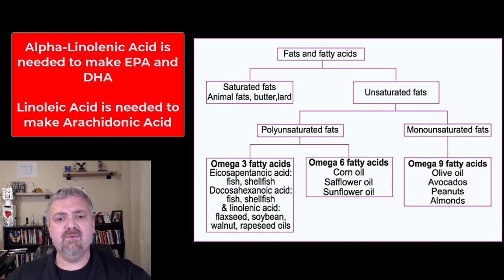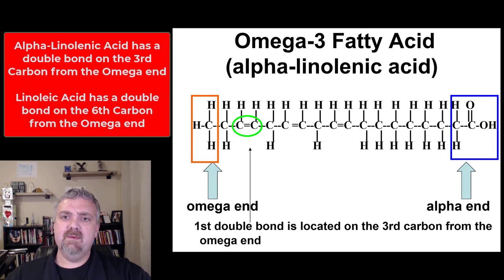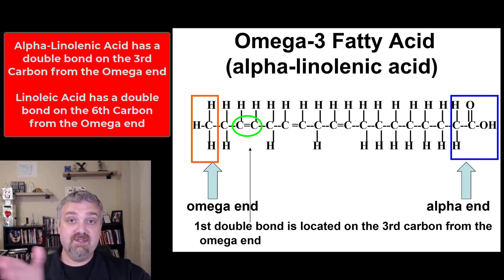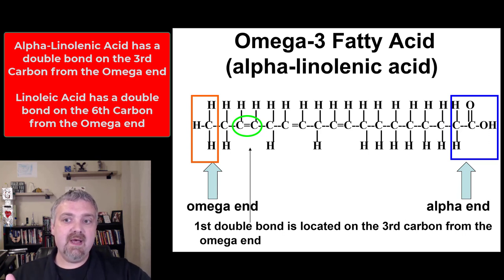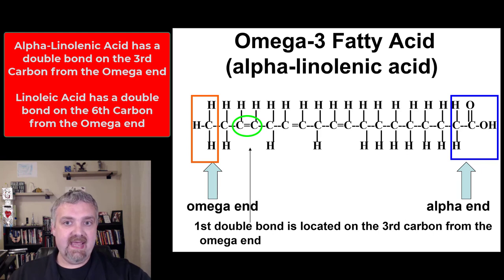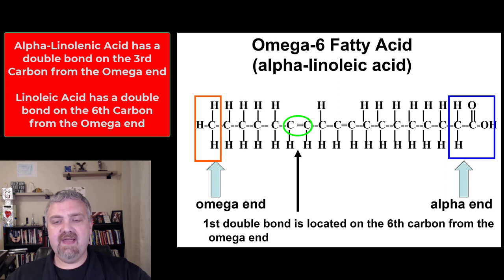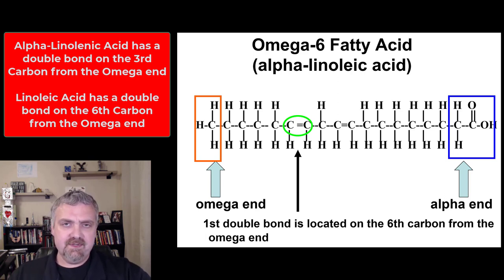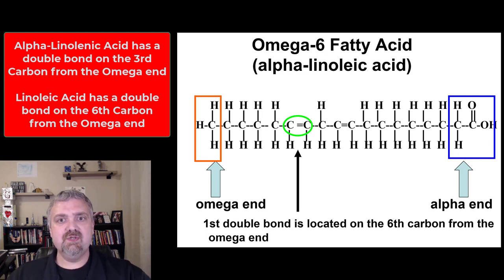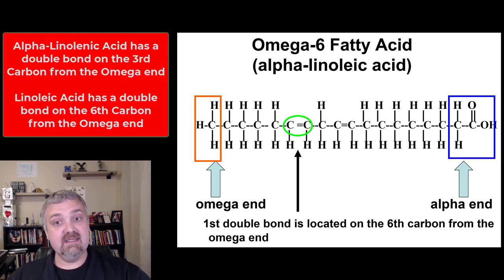So why are they called omega-3 and omega-6 fats? Here we see the omega-3 fatty acid, alpha-linolenic acid. It is called that because on the omega end, the first — or some would say last — double bond on this fatty acid tail is three carbons in from the omega end. That's why it's called an omega-3 fatty acid. For the omega-6 fatty acid, linoleic acid, the first or last double bond is six carbons in from the omega end. That's where the terms omega-3 and omega-6 come from.